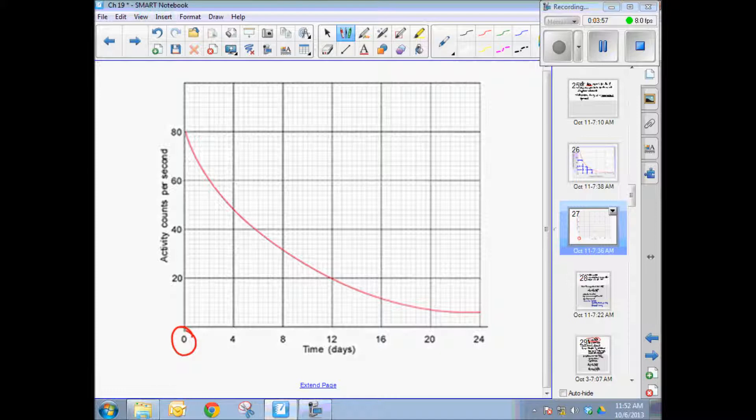What would one half-life be? Of course, it's 40 counts per second. That's the population has decreased by one half. So if we go to 40 counts per second, and go over to the curve, here's 40 counts per second, go over to the curve and drop down, we can figure out what the half-life is. It looks like the half-life is approximately six seconds.